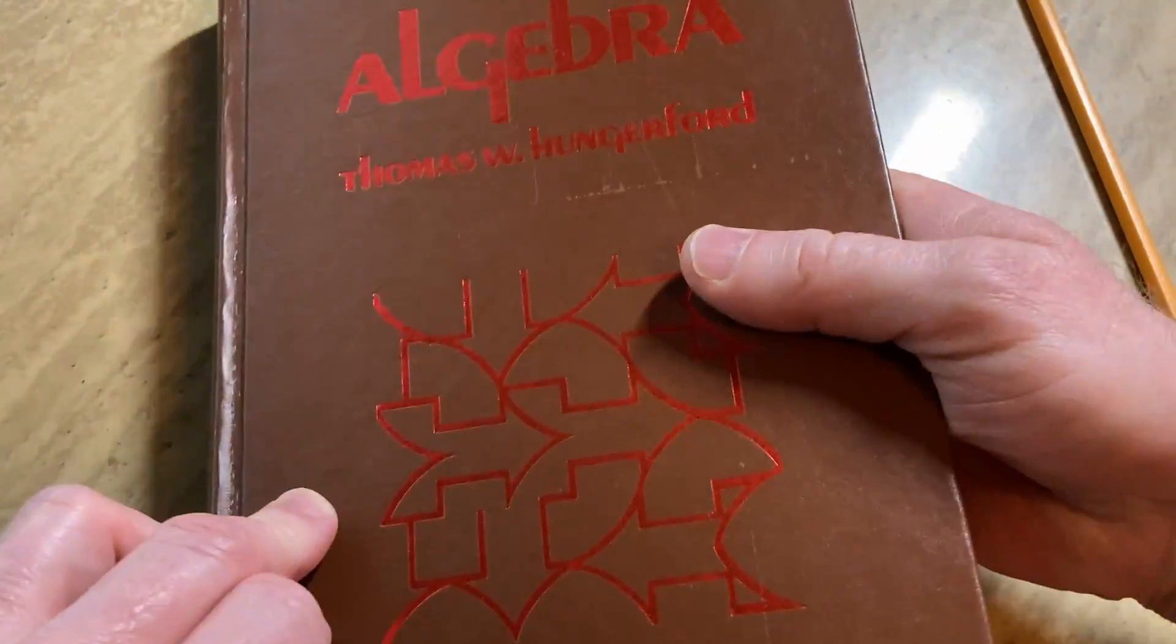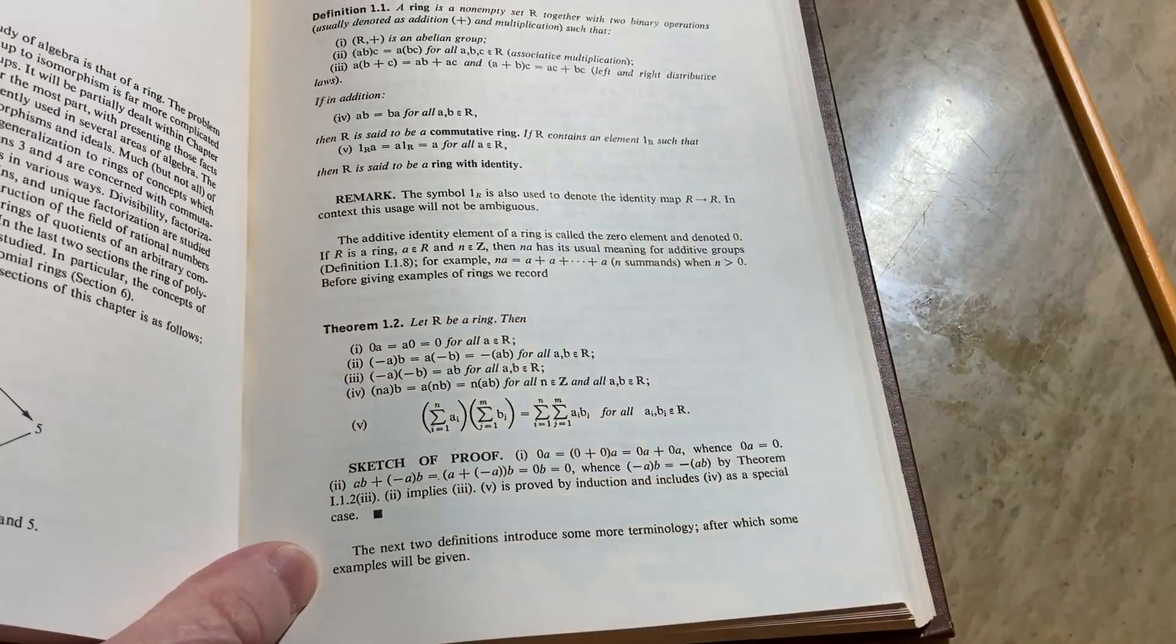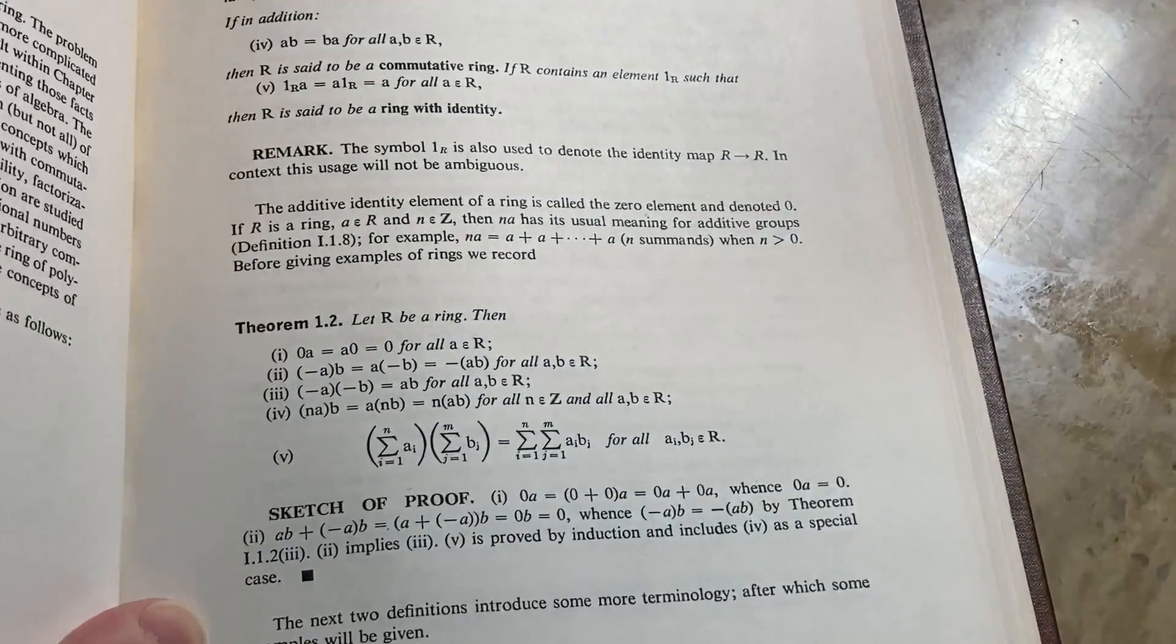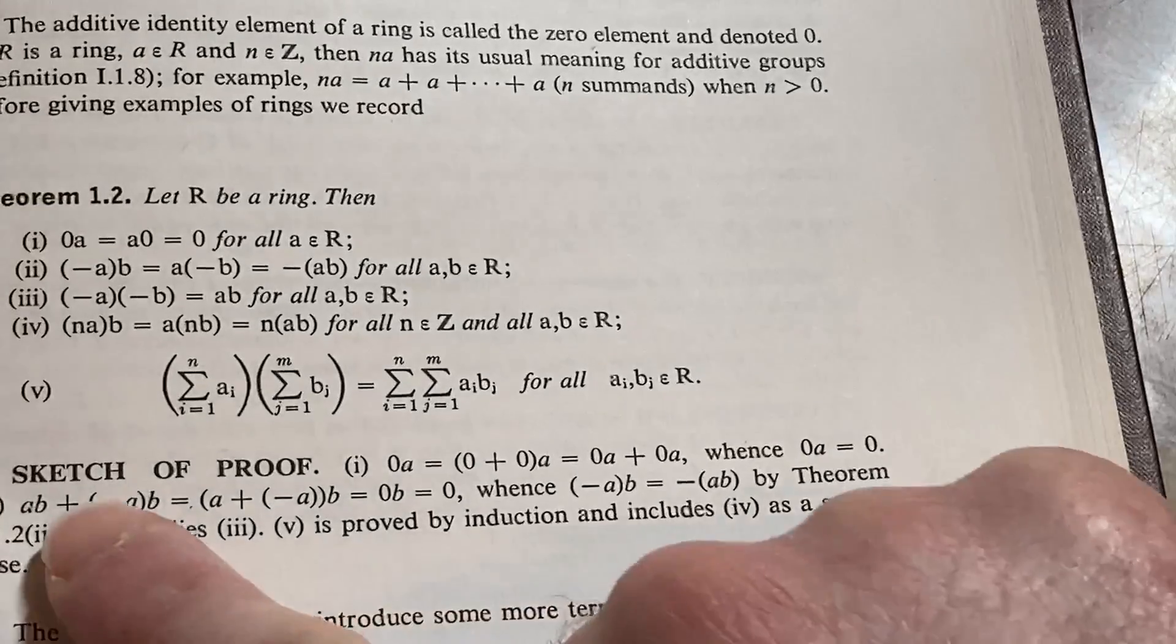So in this book, which is a wonderful book by the way, the proof is given but the reasons aren't specified. So we're going to specify and we're going to fill in the holes. Here's a sketch of the proof. I like how he put sketch. Hungerford is a very intelligent person. He knows it's a sketch.